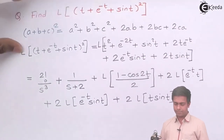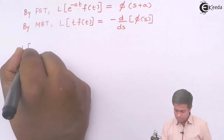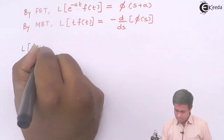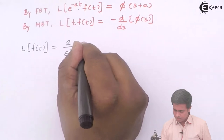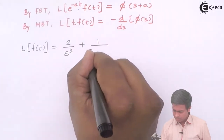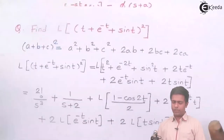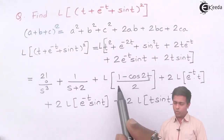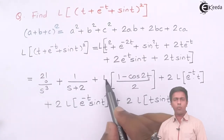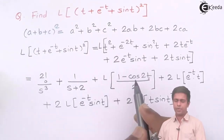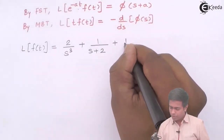Let's write down the two properties. By first shifting theorem: Laplace of e^(-at)·f(t) = φ(s+a), where φ(s+a) is obtained from φ(s) by replacing s with s+a. By multiplication by t property: Laplace of t·f(t) = -d/ds[φ(s)]. Now for the first three terms, I take (1/2) outside for the sin²t term: Laplace of 1 is 1/s, and Laplace of cos 2t is s/(s²+4).